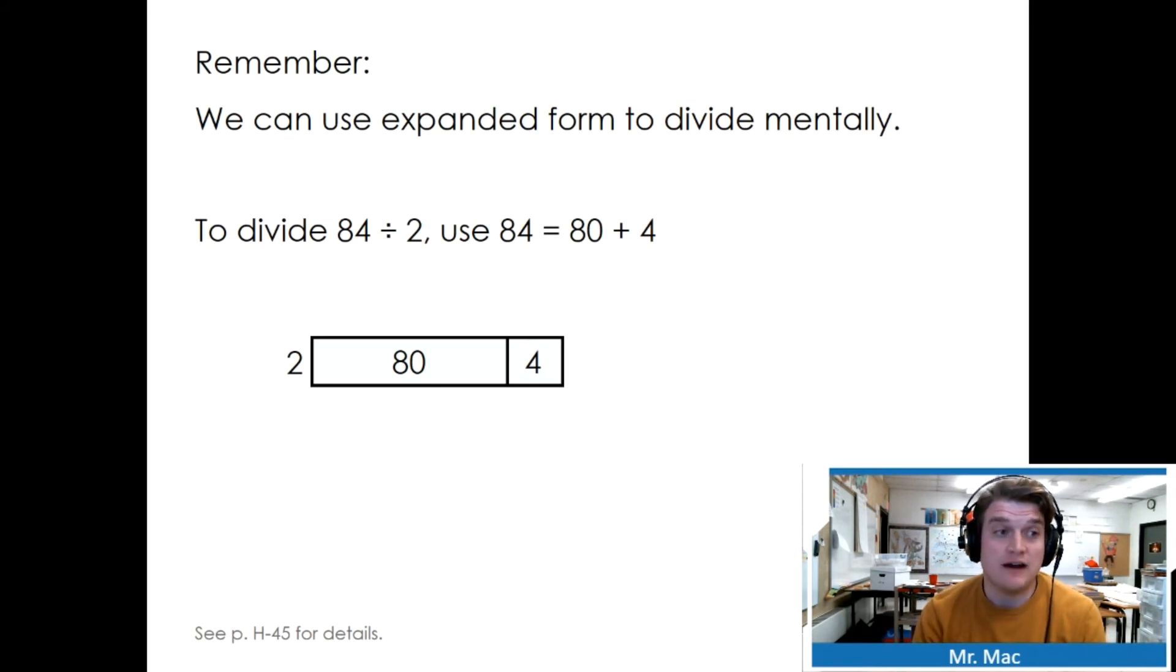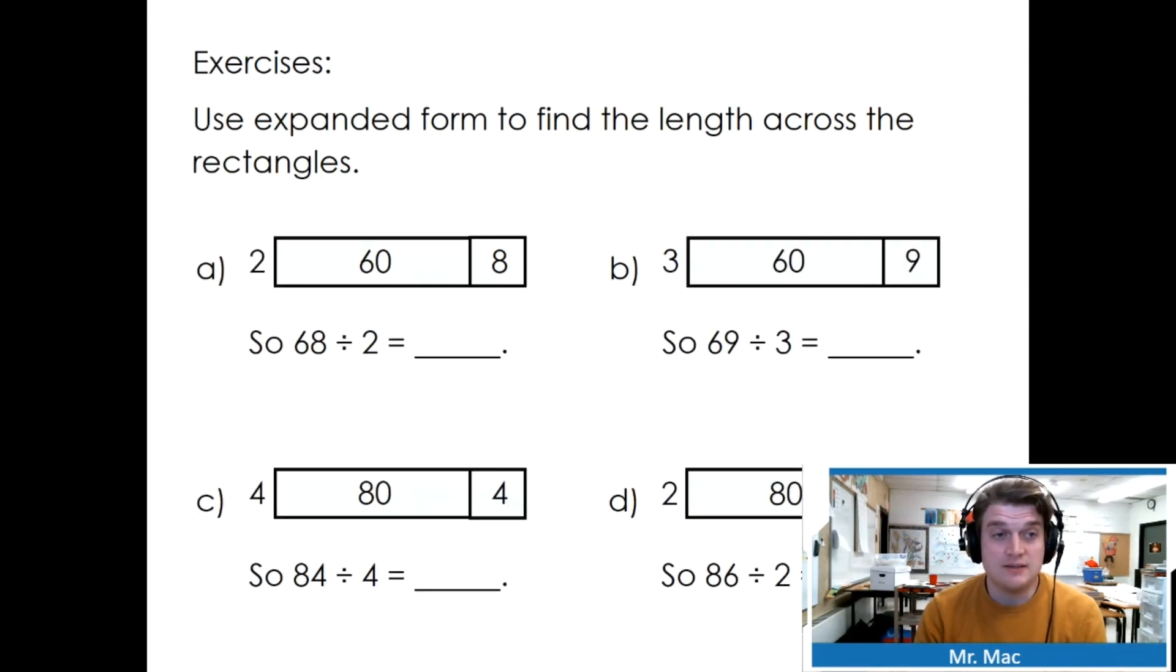Remember, we can use expanded form to divide mentally. To divide 84 divided by 2, use 84 equals 80 plus 4. 80 divided by 2 in brackets plus 4 divided by 2. Use expanded form to find the length across the rectangles. So 68 divided by 2 is the same as 60 plus 8. I know 60 divided by 2, half of 60, is 30. I know half of 8 is 4. And then I know 68 divided by 2 is 34. Go ahead and finish the next ones.